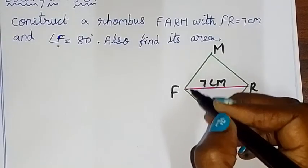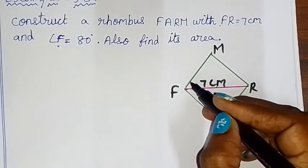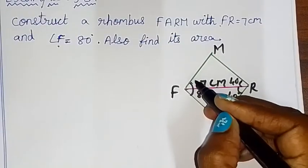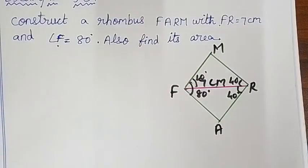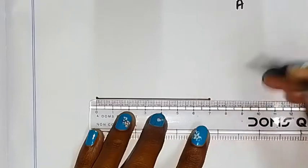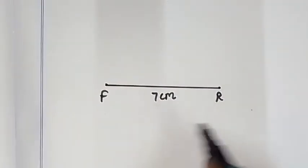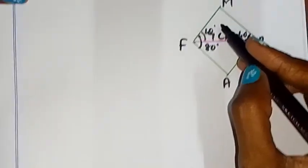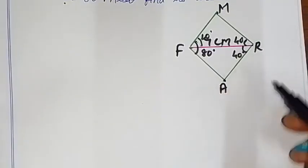Angle F is 80 degrees. Since the diagonal bisects the angle, this triangle has 40 degrees and the other triangle also has 40 degrees — total is 80 degrees. The side FR is 7 cm and SR is 7 cm. Now we construct the figure with 40-degree angles. Using a protractor at R, mark 40 degrees, cut the line, and get point M. So we have 40 degrees at both positions, and mark point A.